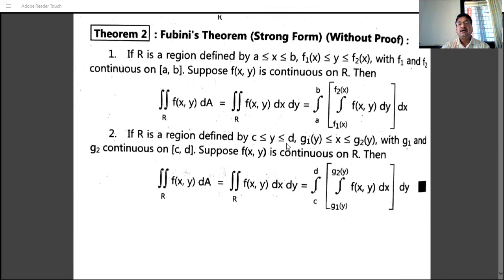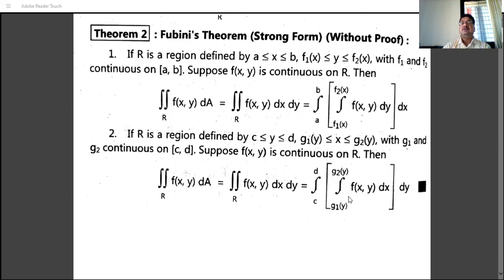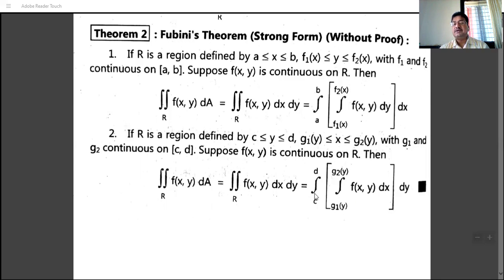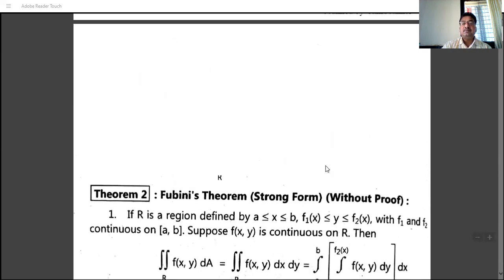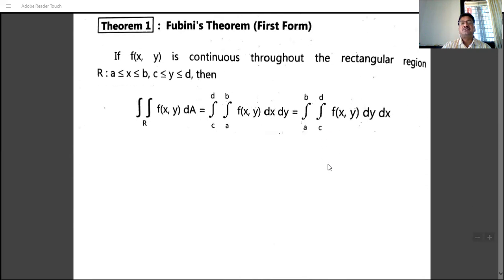If the limit of y is variable in terms of x, integrate with respect to y first, then x. If the limit of x is in terms of y — say x runs from g1(y) to g2(y) — and the limit of y is constant, then integrate with respect to x first, then y. The rule is: if the limit of one variable is in variable form, integrate with respect to that variable first, then integrate with respect to the other variable whose limit is constant.